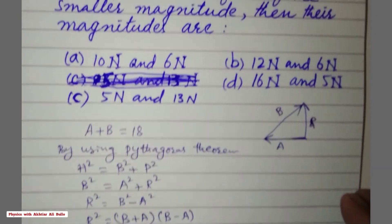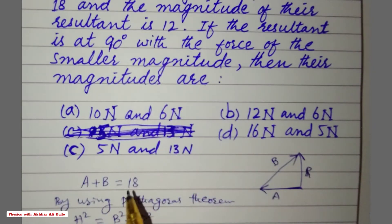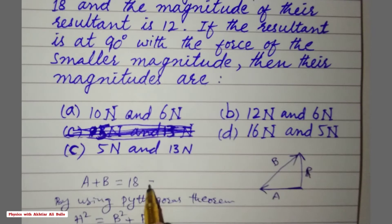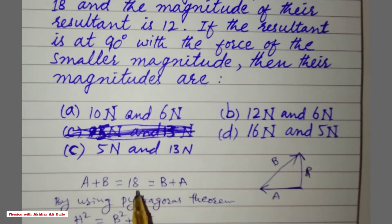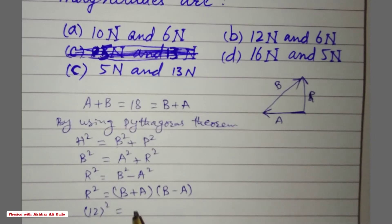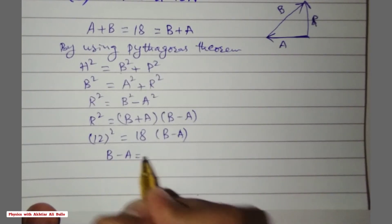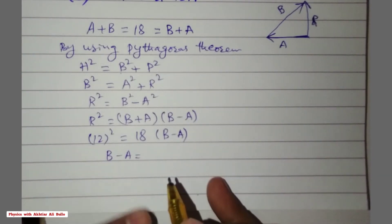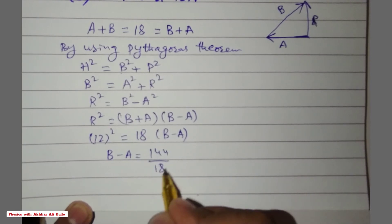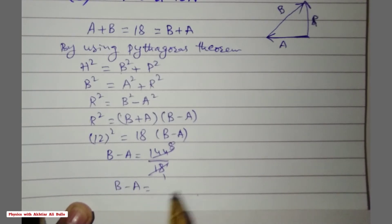R is 12 and A plus B is 18. So R² = 12² = 144, and 144 = (B + A)(B − A) = 18 × (B − A). Therefore B minus A = 144 divided by 18, which equals 8.